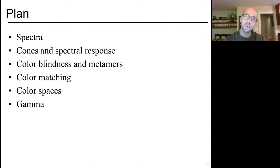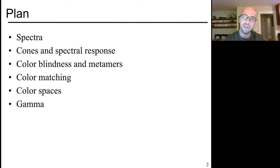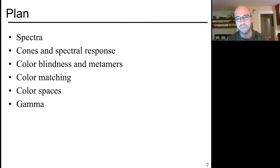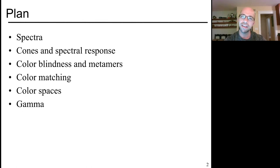Along the way, we'll talk about spectra of light and the spectral response that happens in your eye, color matching procedures so that we can standardize colors across different displays, and finally one perceptual and computational trick for storing intensities known as gamma, which is typically used in image formats today.